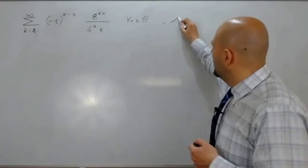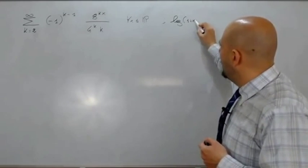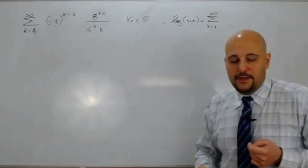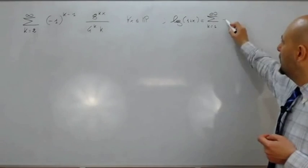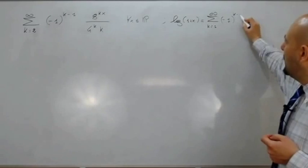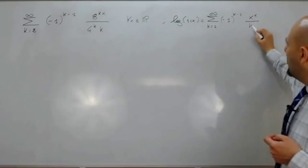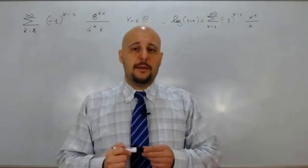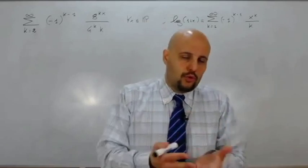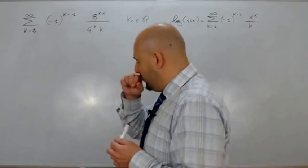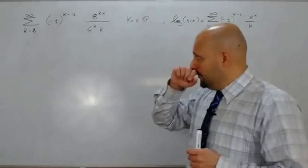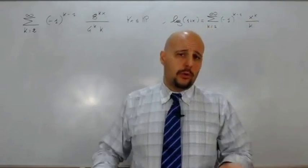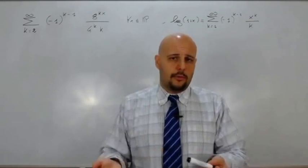La serie la cui somma è logaritmo naturale di 1 più x è sommatoria per k da 1 a infinito di meno 1 elevato alla k meno 1, che moltiplica x alla k su k, dove l'insieme di convergenza puntuale è x compreso fra meno 1 e 1, con meno 1 escluso e 1 incluso. La nostra serie parte da 2 e non da 1, quindi dovremo sottrarre il termine quando k è 1.